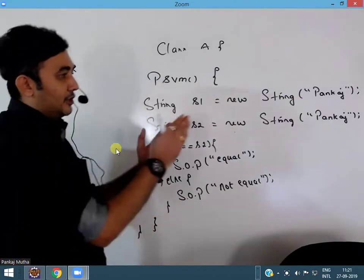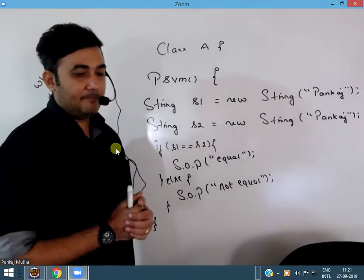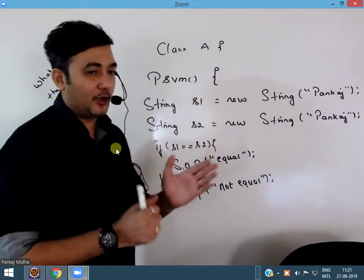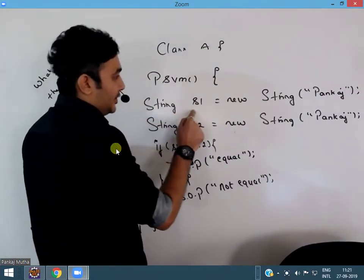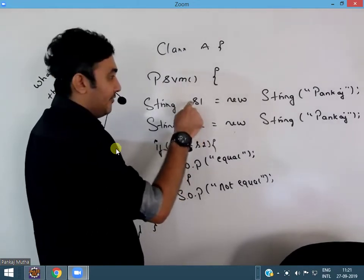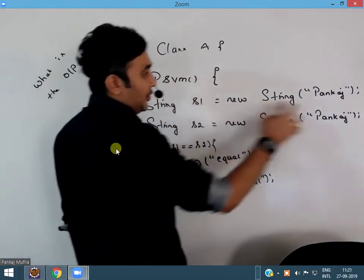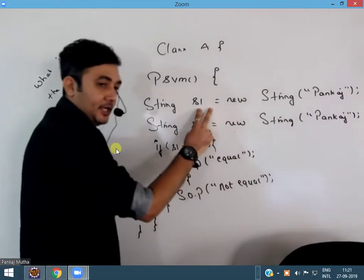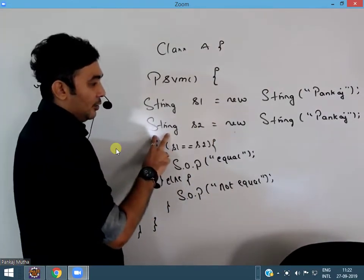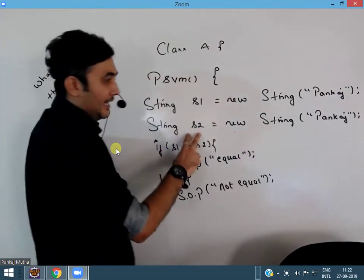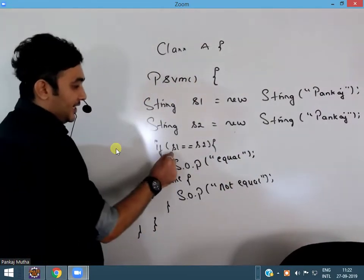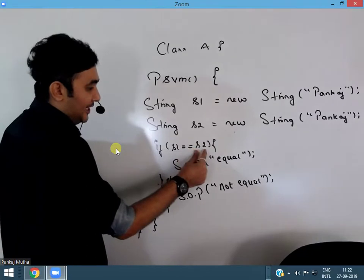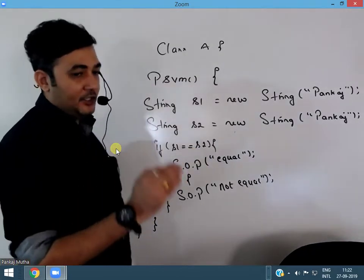Please try to solve this program and tell me what is the output. I'm creating a string variable s1 and storing the value Pankaj sir academy. Then I'm creating a string variable s2 and again storing Pankaj sir academy. So when I'm comparing s1 double equals s2, what is the output?